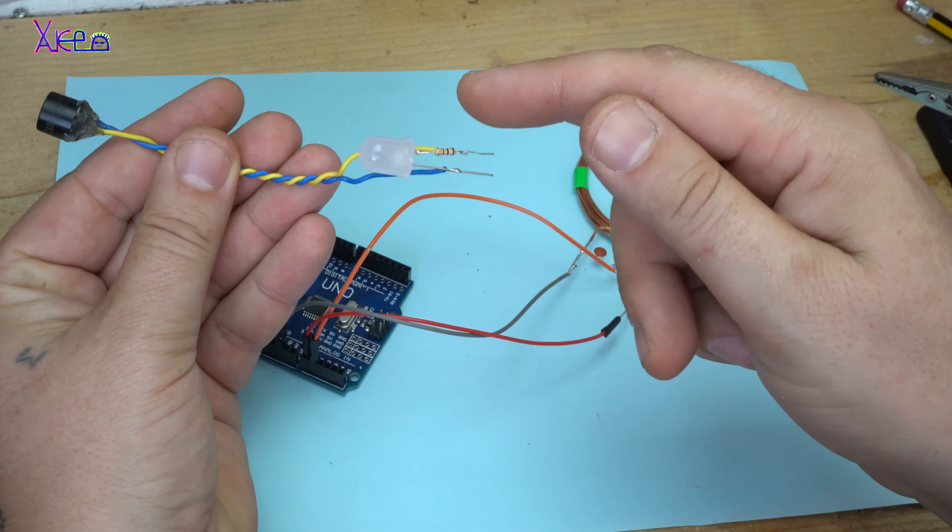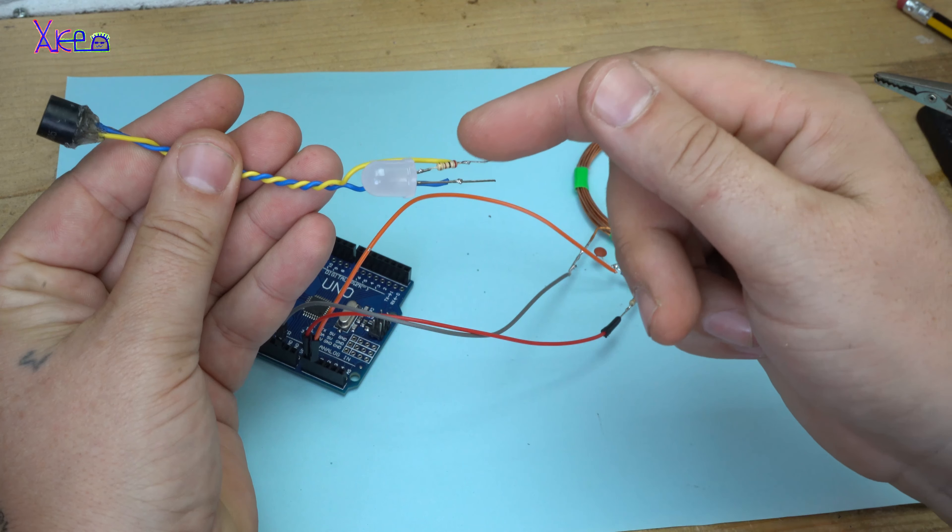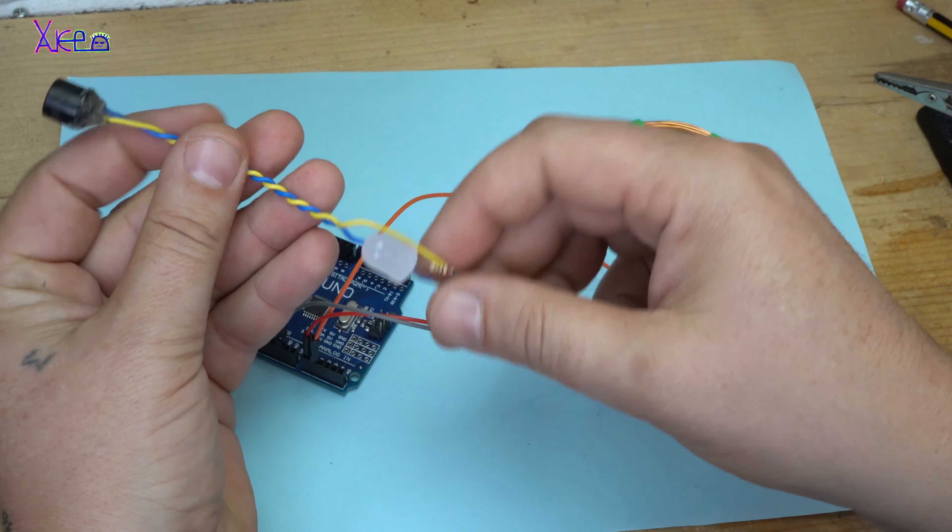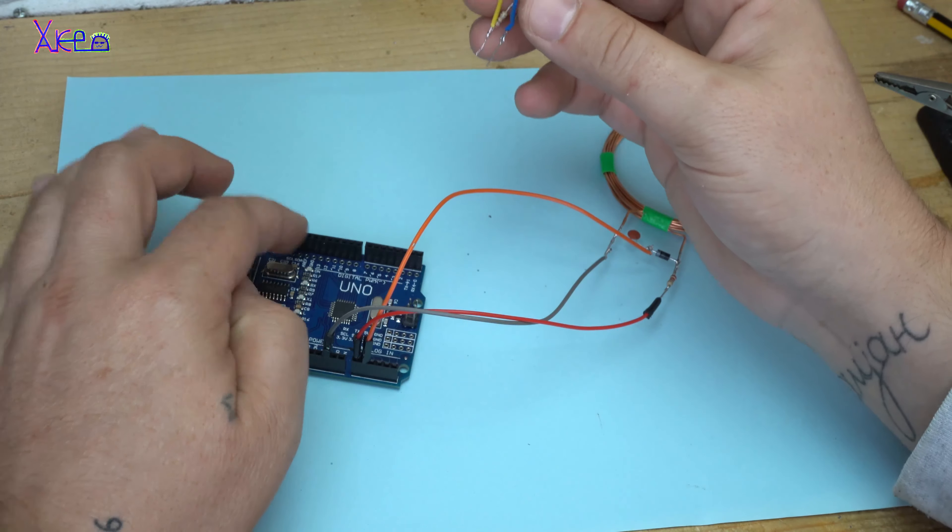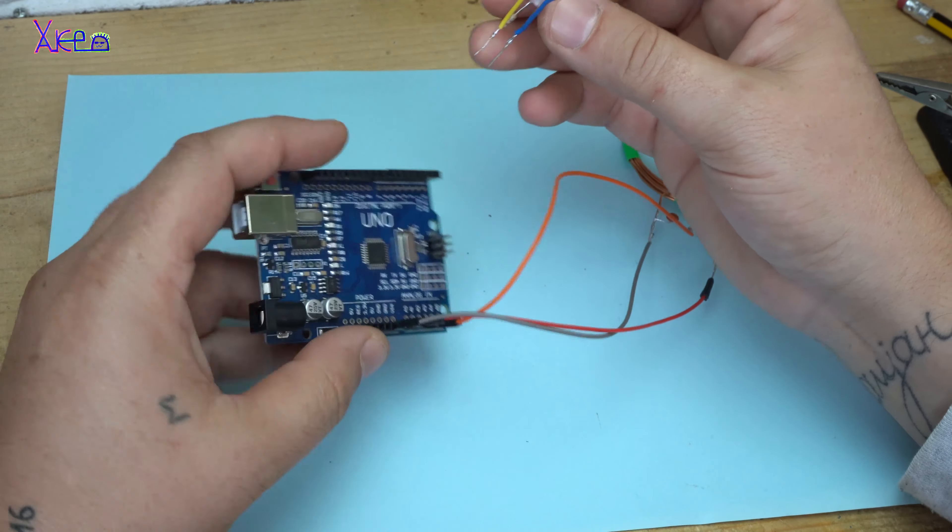The LED through the one kilo ohm resistor and the buzzer are connected in parallel on ground and digital pin 12.